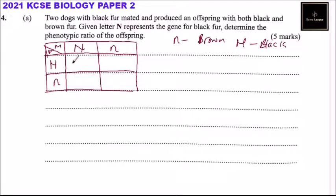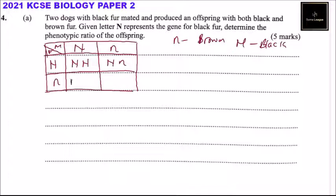The female has a dominant black color gene and a dormant brown color gene. So if they meet, they can reproduce a black dog. Combining these, they can produce black with brown. And then this combination, you can have black with brown. And this one, you have brown color.